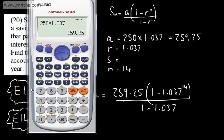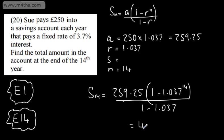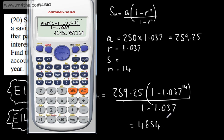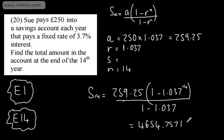So into a calculator, what I'm going to do is just use my answer. So it's going to be my answer times 1 minus 1.037, and that is going to be to the power of 14. And then we're going to divide this by 1 minus 1.037. That's going to give me 4654, so 4654.757164. So let's now give this, we'll do it to the nearest pence.